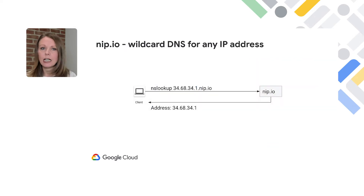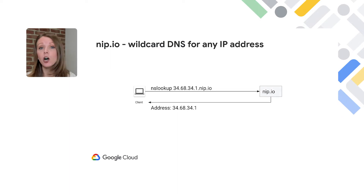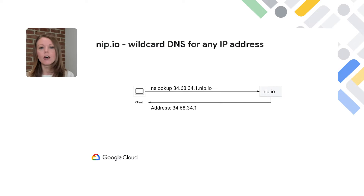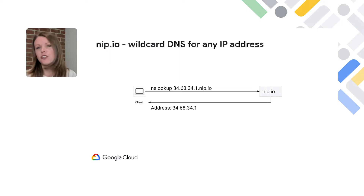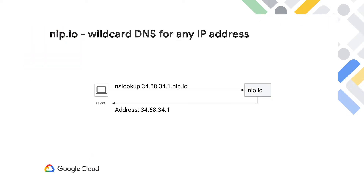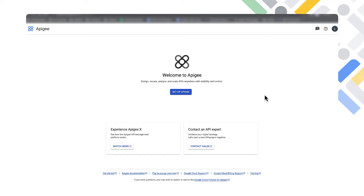One last detail I wanted to touch on is we are using a commonly used open source domain called nip.io. We use that for a lot of our Apigee demos — we're using it as our domain in this demo. It's going to act as a wildcard DNS for any IP address. This is just so we don't have to purchase our own domain, just for demo purposes. So let's jump into the demo.